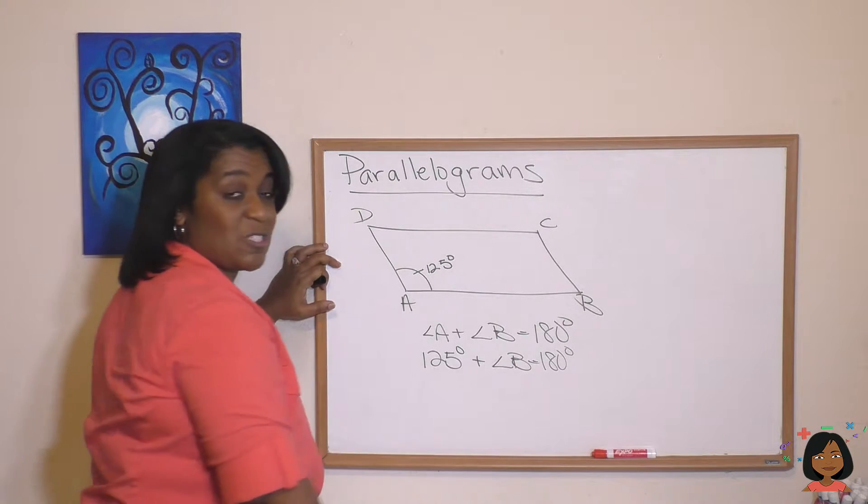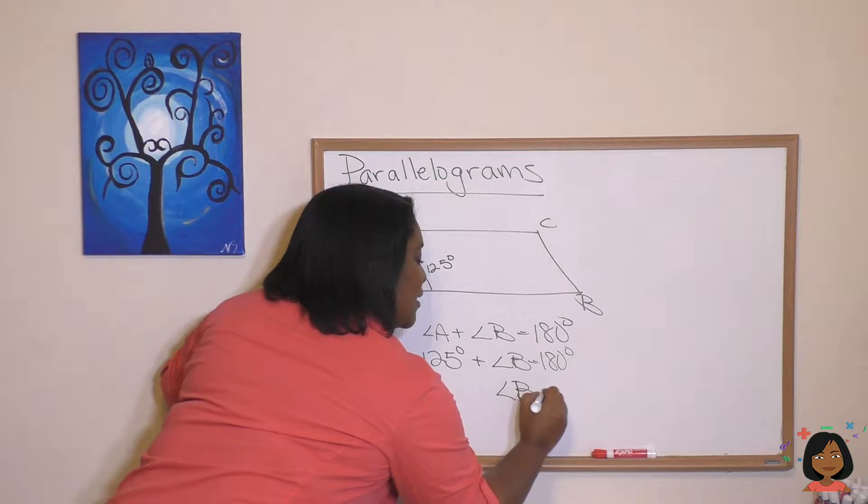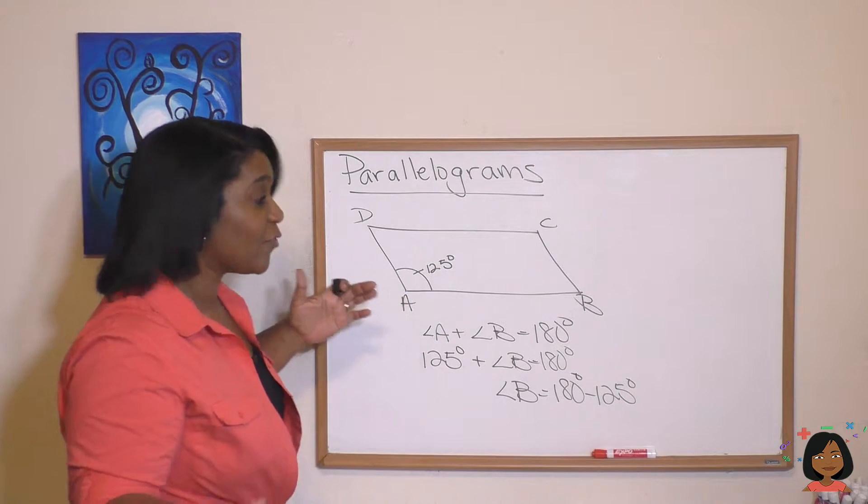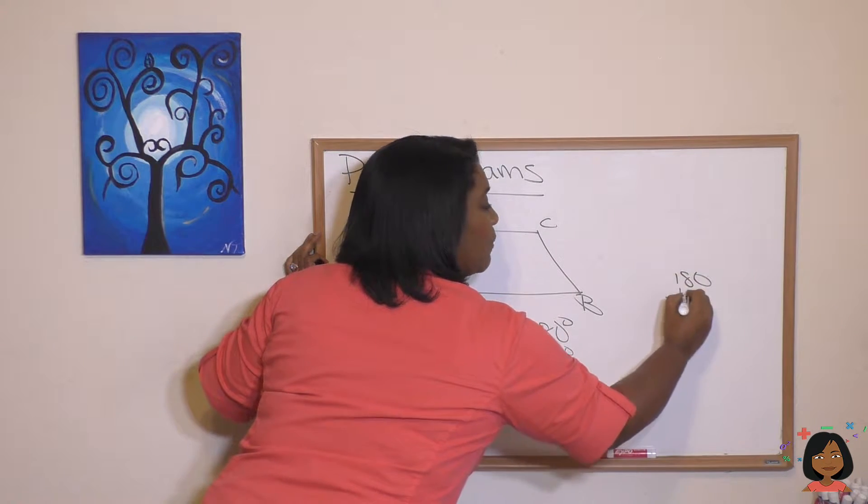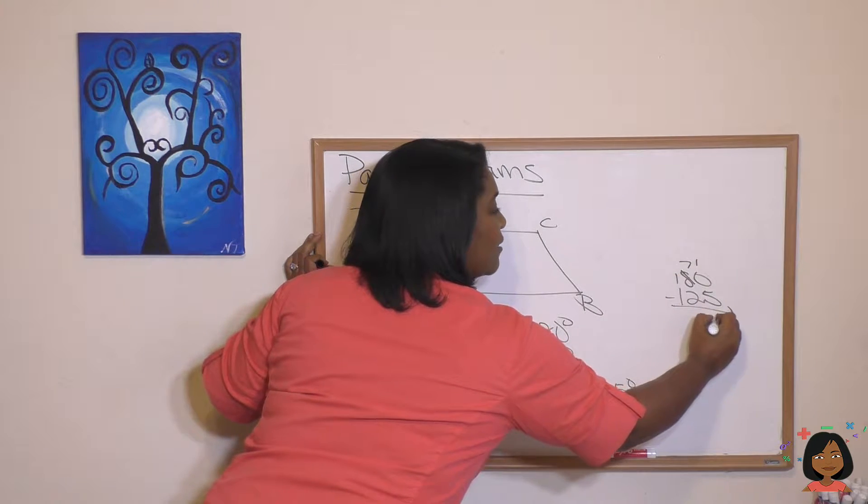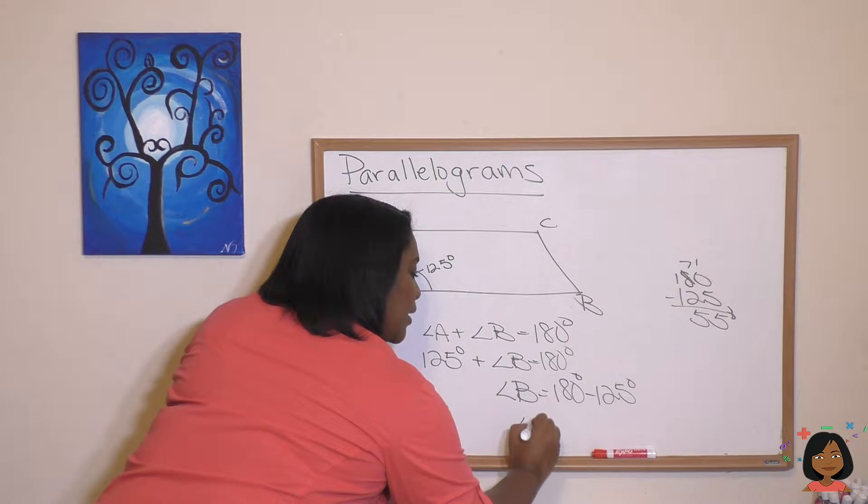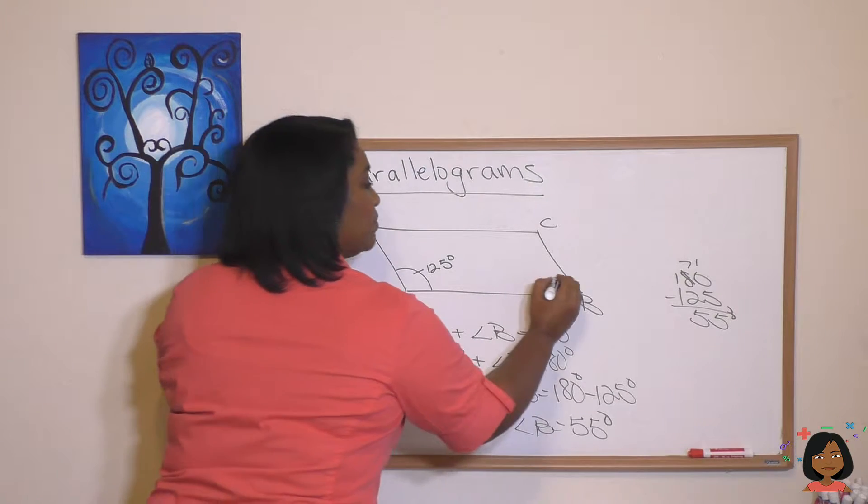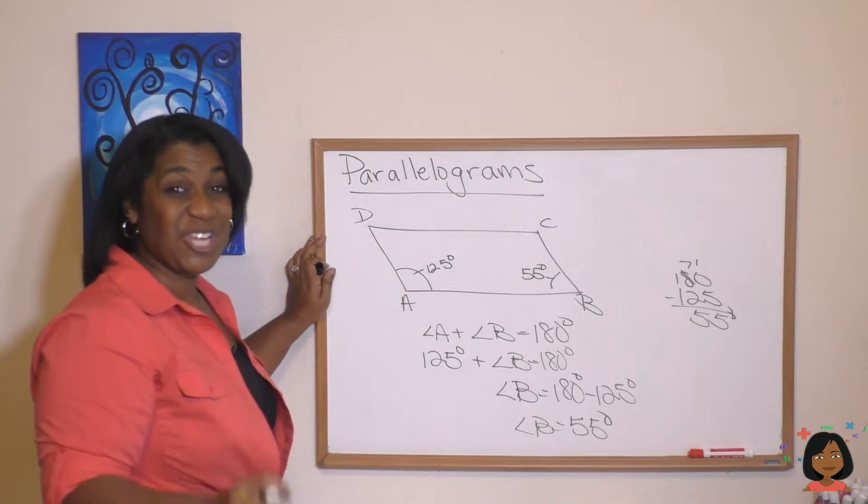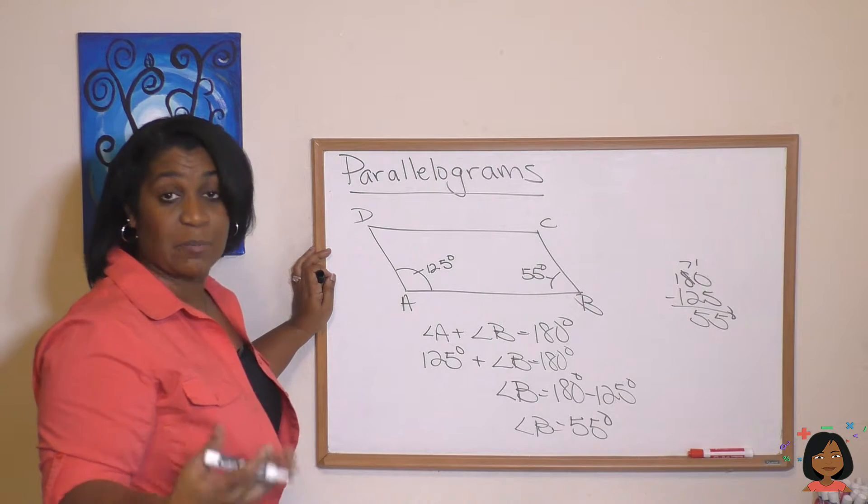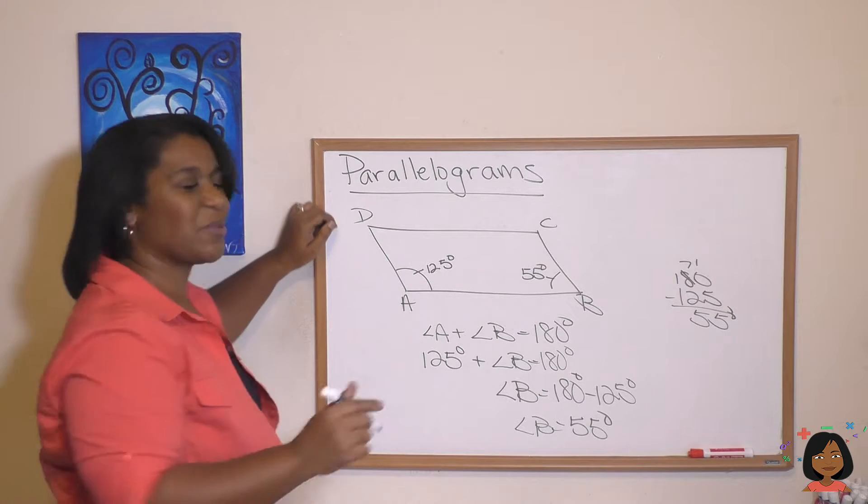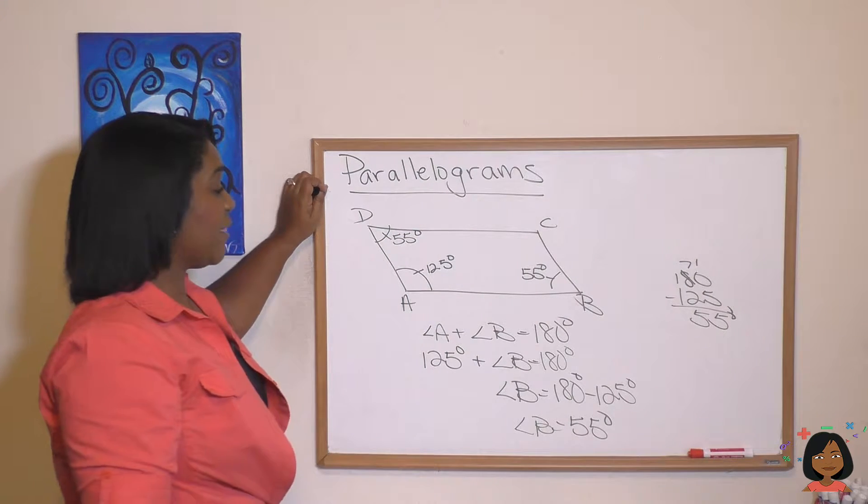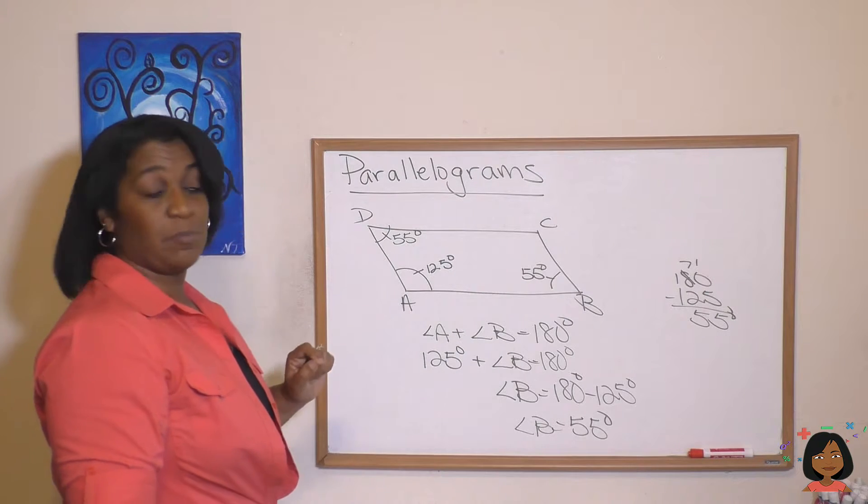All we have to do now is do some subtraction. Angle B is going to be 180 minus 125. And you know me, I like to do my math over to the side, so let's do it. 180 minus 125 gives us 55 degrees. So angle B equals 55 degrees. Let's write that in: 55. Now I told you that the adjacent angles to angle A are going to be supplementary, so that also means that angle D will also equal 55 degrees.